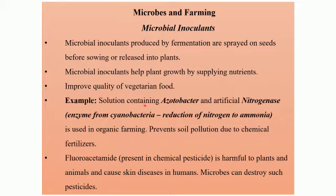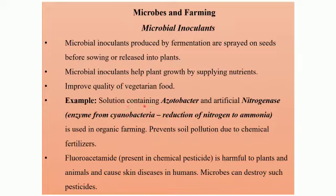A solution containing azotobacter and artificial nitrogenase. Azotobacter is a bacteria, and the solution containing this bacteria is sprayed onto the seeds or plants. What is the function of this bacteria? It brings about nitrogen fixation. So it is a nitrogen-fixing bacteria, and it is going to act as a bio-fertilizer. Its function is to convert the atmospheric nitrogen into ammonia.